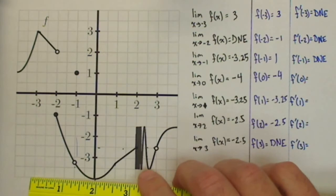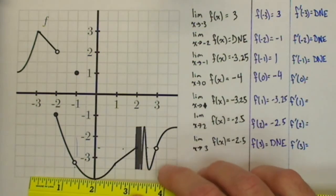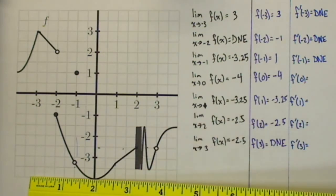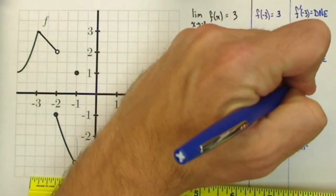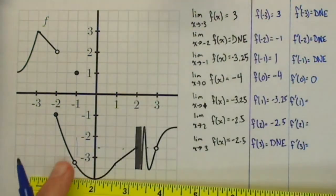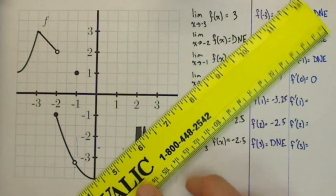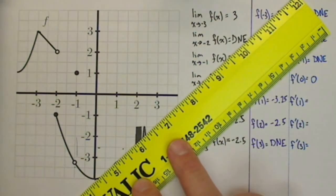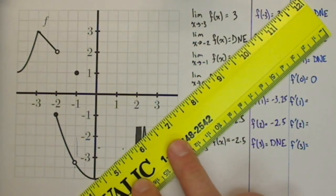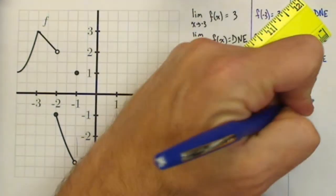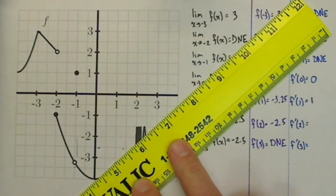Down here at 0, that's nice for us. It looks like we've got a tangent line. It looks like we've got a horizontal tangent. It looks like f prime of 0 is going to equal 0. f prime of 1, it looks like we can get a tangent line in there. It looks like a line with a slope of about 1, so I'm going to say f prime of 1 is about 1.